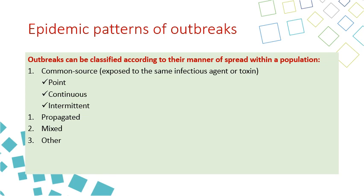Another benefit of the epidemic curve is to determine the pattern of the outbreak. Is your outbreak common source — meaning all patients were exposed to the same infectious agent or toxin — or is it propagated, where some patients were initially exposed to a common source and then started infecting other people through person-to-person transmission? These are the two main types. Sometimes a disease can start as common source and then become propagated.